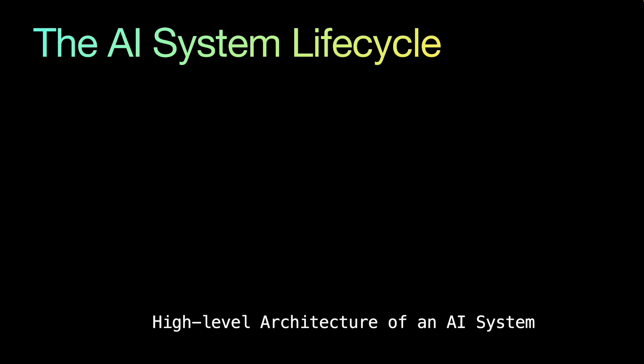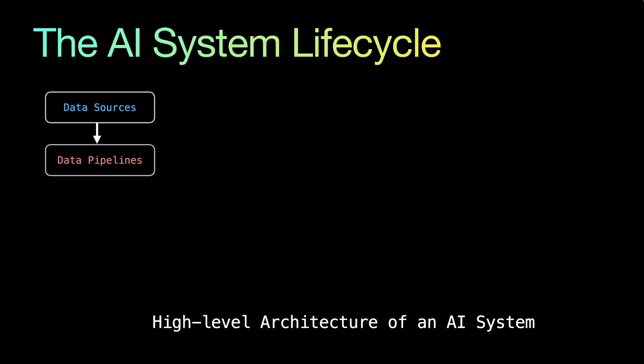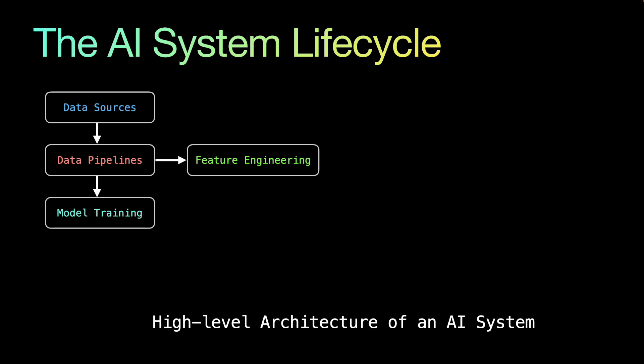Now let's look at the high-level AI system lifecycle. It starts with data sources — where raw information originates — such as databases, APIs, user activity, IoT devices, and sensors. From there it goes to data pipelines, which collect, clean, and transform data and move it to the next stage. Then comes feature engineering, where we transform raw data into meaningful inputs called features that can be used by the models.